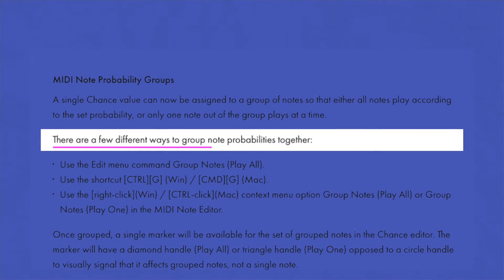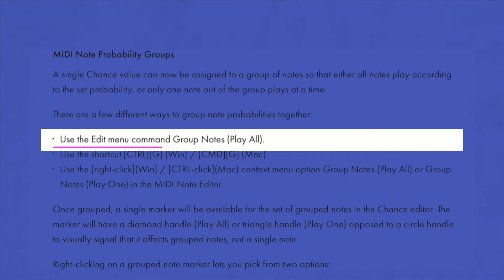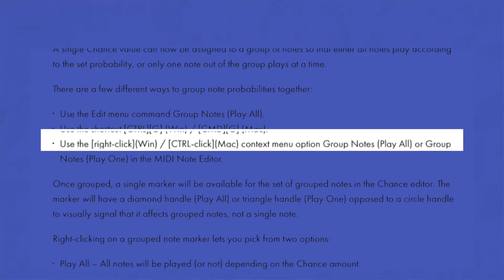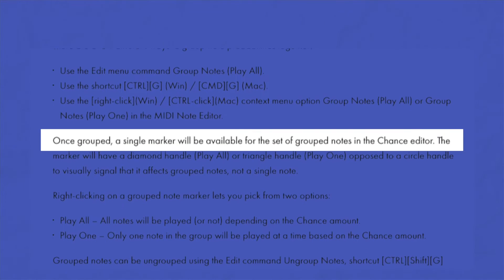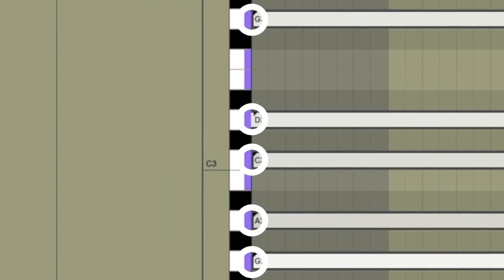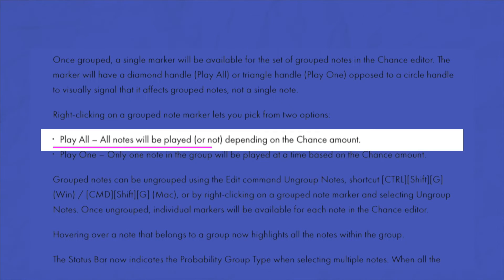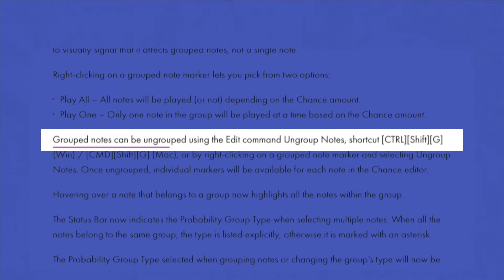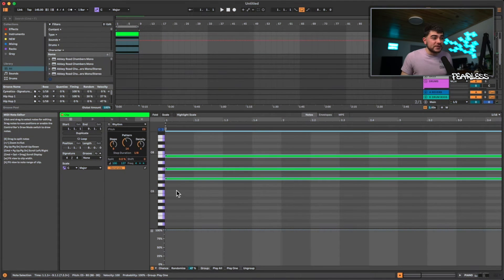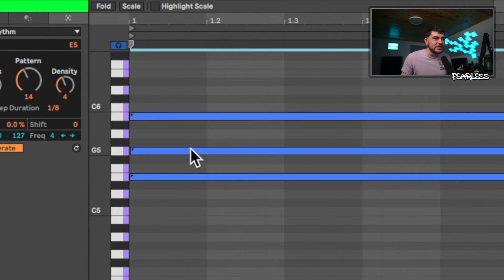There are a few ways to group note probabilities: use the Edit menu command 'Group Notes: Play All', the shortcut Ctrl/Cmd+G, or the right-click context menu to choose 'Group Notes: Play All' or 'Group Notes: Play One'. Once notes are grouped, a marker appears in the top left corner of each note. With 'Play All', all notes play or don't play depending on the chance amount. With 'Play One', only one note in the group plays at a time. Groups can be ungrouped with Ctrl/Cmd+Shift+G. Hovering over a grouped note highlights the entire group.